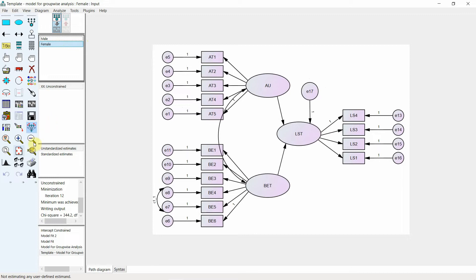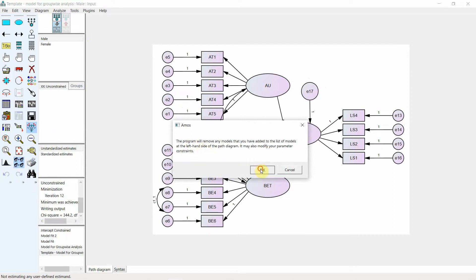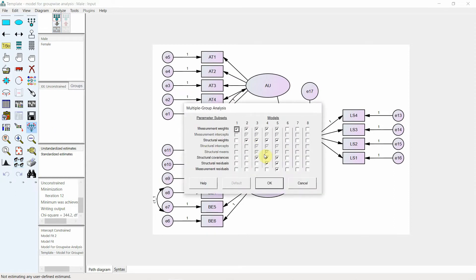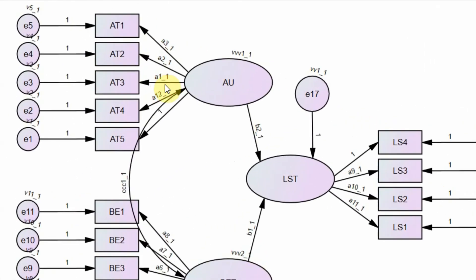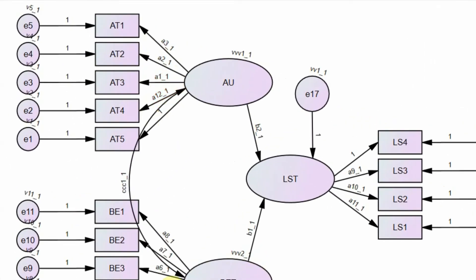The next step is to set up our multi-group analysis. Click here, press OK, and leave the defaults. Now look — the parameters have been named. A is used for factor loadings and B is used for structural relationships.